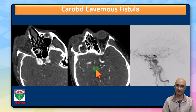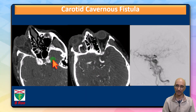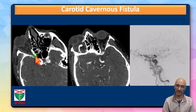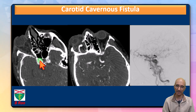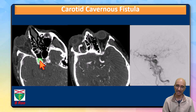To summarize, our patient had a carotid cavernous fistula. We saw retrograde filling of the right superior ophthalmic vein with the same contrast density as the internal carotid artery. We also saw a direct communication between the cavernous segment of the internal carotid artery and the cavernous sinus, which was asymmetrically bulging.